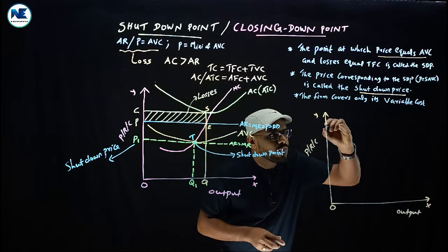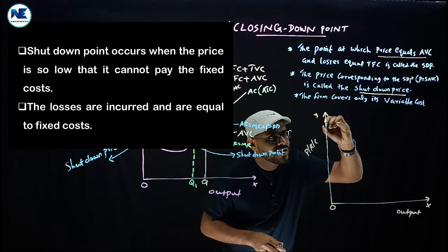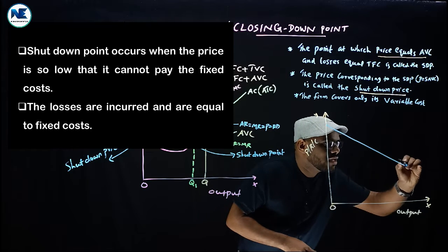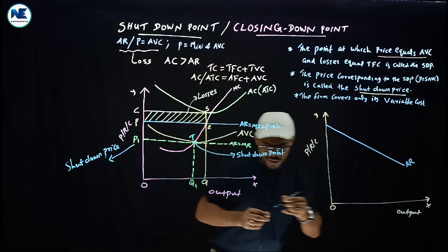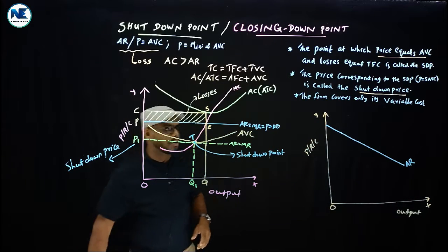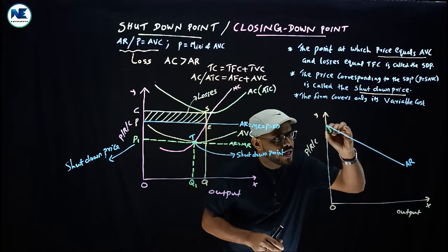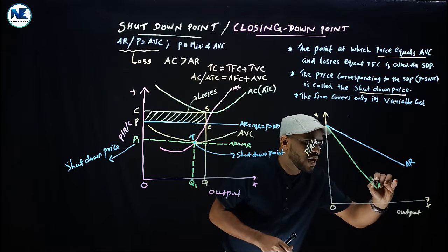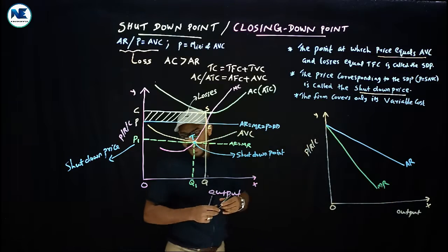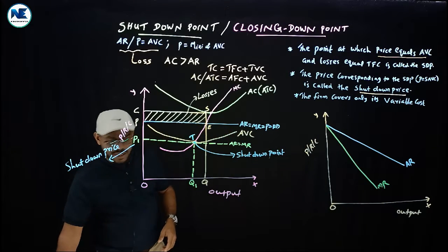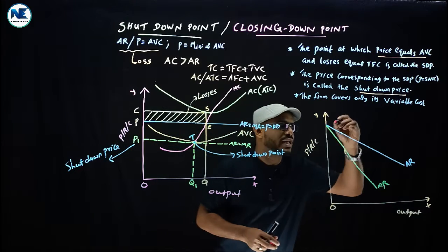We have a downward sloping average revenue curve. In monopolistic competition, it's flatter; in monopoly, it's steeper. Then marginal revenue, and the average cost curve showing losses or break-even.